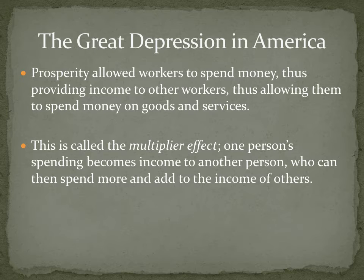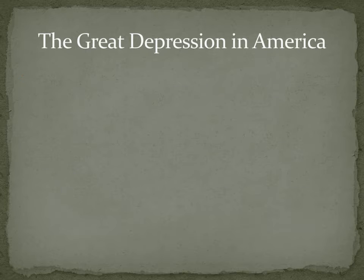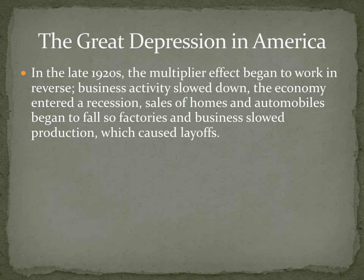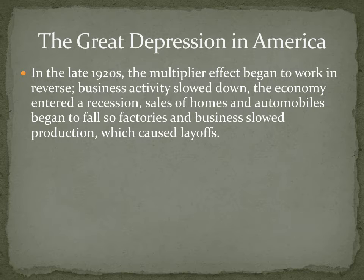This multiplier effect is important in all economies. We're seeing the reverse multiplier effect with the coronavirus in China, because people are staying home and not spending money, so businesses are not able to survive and stay open. In the late 1920s, the multiplier effect began to work in reverse: business activity slowed down, the economy entered a recession, sales of homes and automobiles began to fall, factories and businesses slowed production, and all of this caused layoffs.